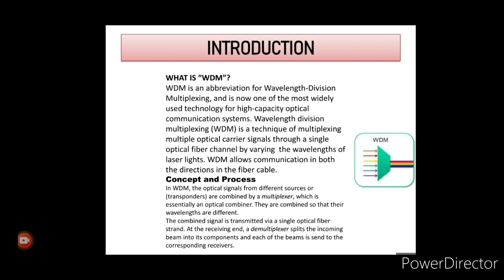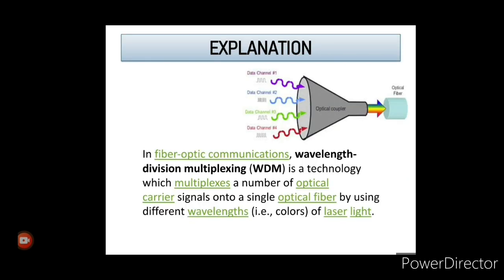The concept and process involved in WDMA: optical signals from different sources or transponders are combined by a multiplexer, which is essentially a combiner. They are combined so that the wavelengths are different, and the combined signal is then transmitted via a single optical fiber strand. At the receiver end, the multiplexer splits the incoming beam into components, and each beam is then sent to the corresponding receivers.